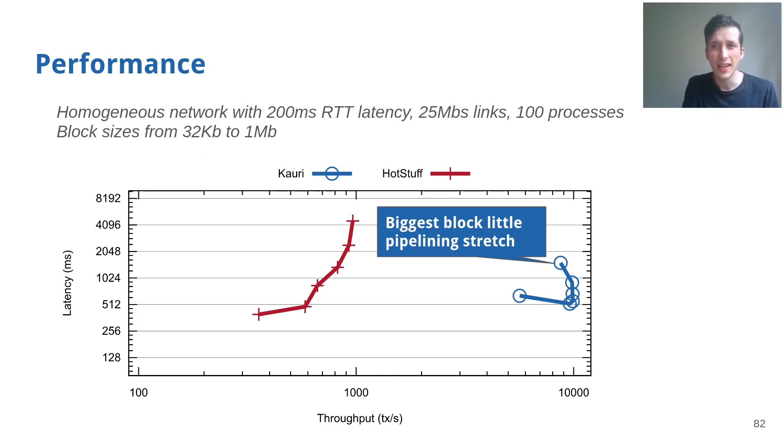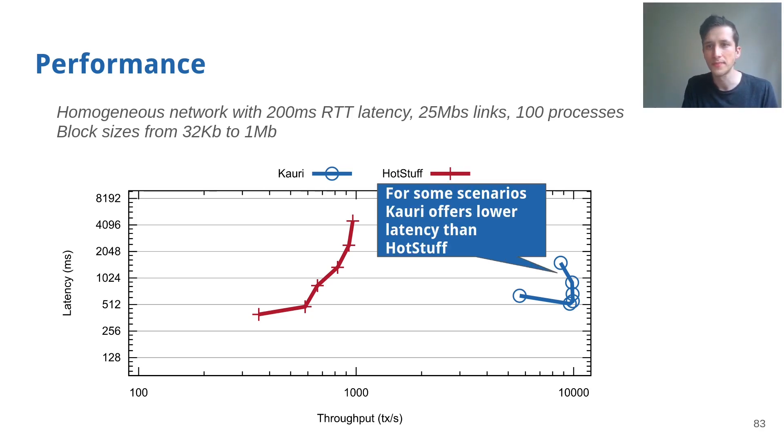The main takeaway of these results is that, due to the bottleneck of the star topology, Kauri not only outperforms HotStuff in all configurations significantly, but also suffers a significantly less dramatic latency increase. Therefore, Kauri not only displays better throughput, but in many situations when the system starts operating closer to the limits, also in terms of latency.